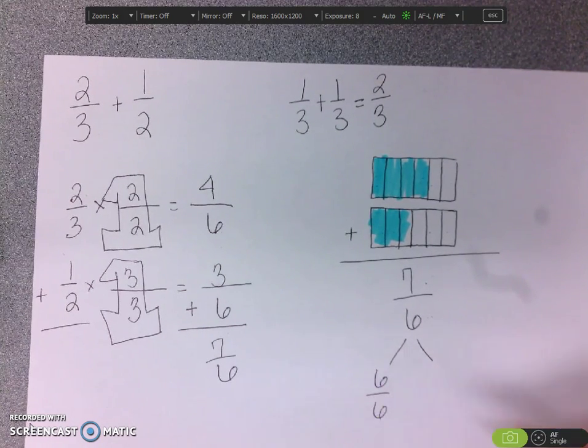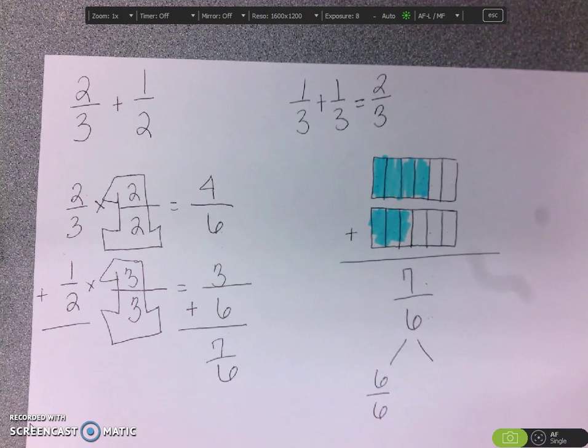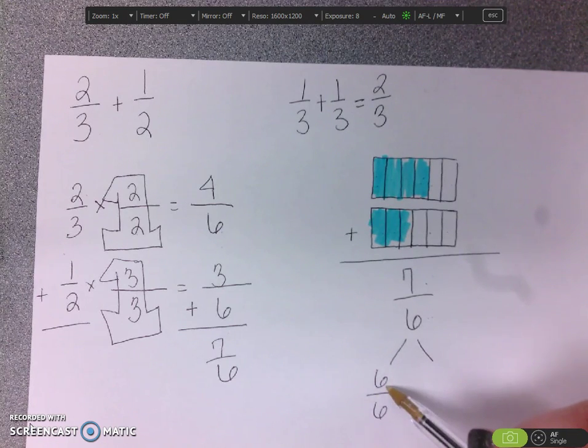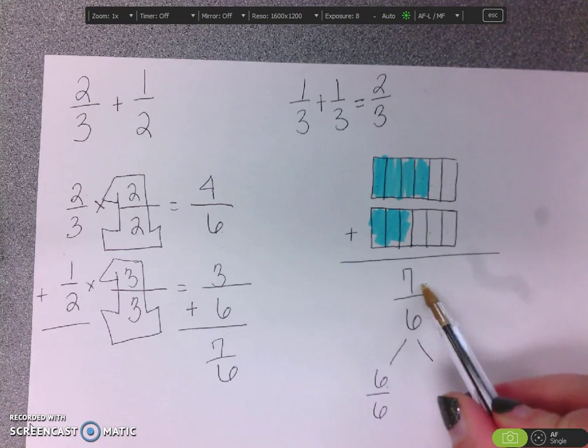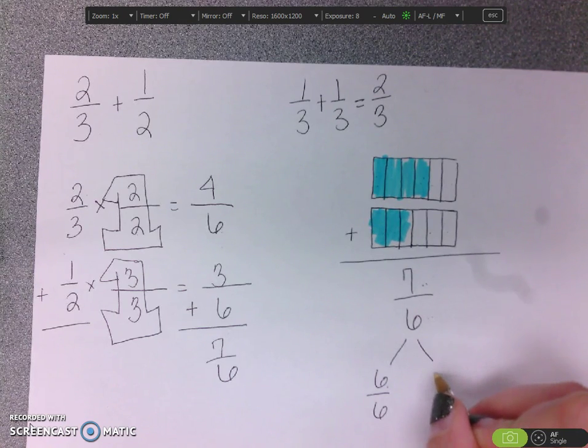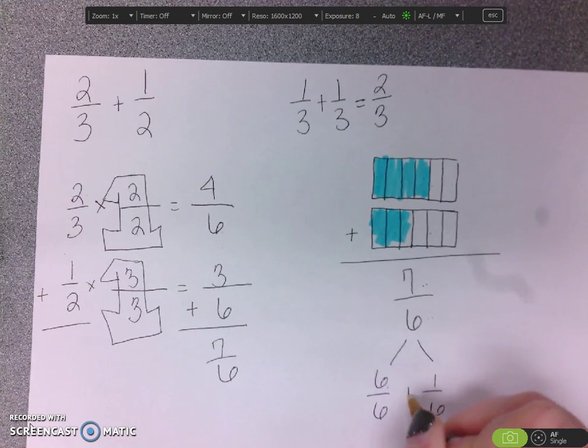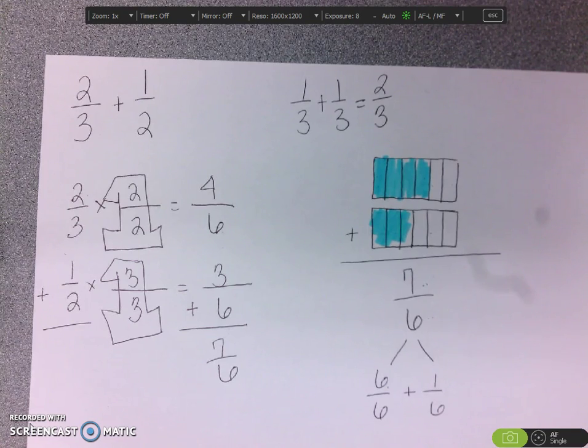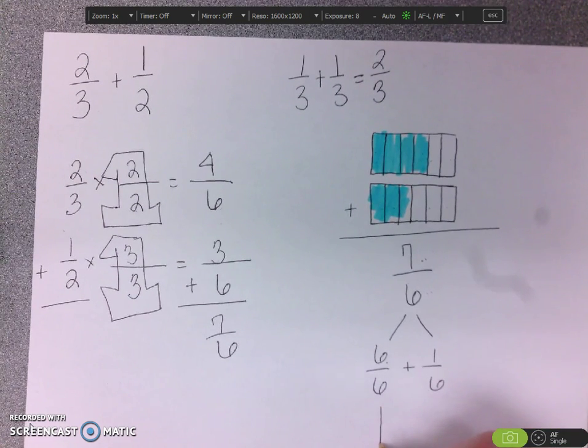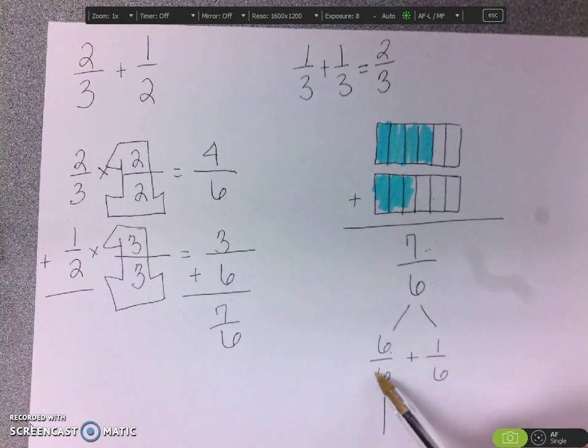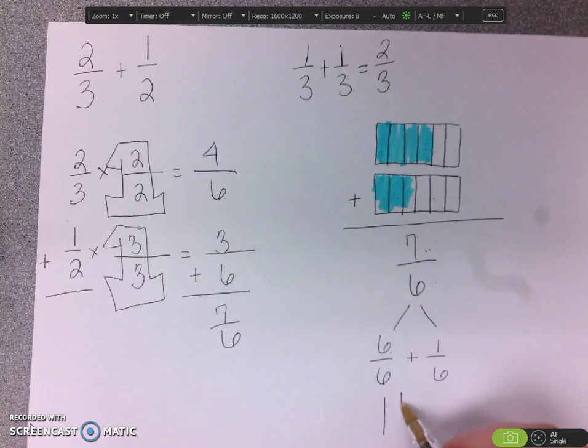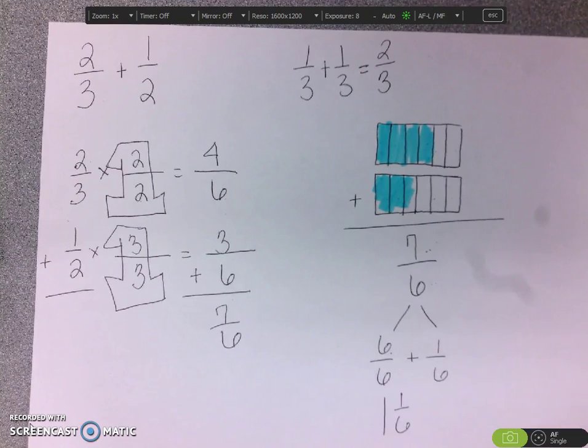So you could pull out six-sixths. And you would say, I have six-sixths and I'm trying to get to seven-sixths. How many more sixths could I do? One-sixth. So you would know that your final answer would be one because six-sixths is the same thing as one whole and one-sixth.